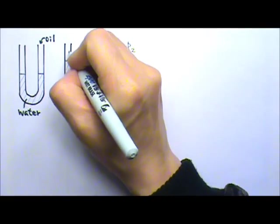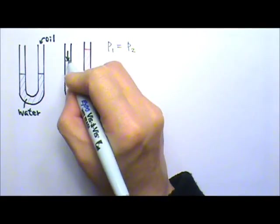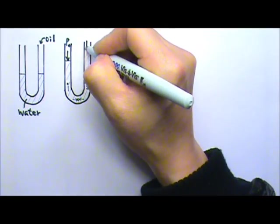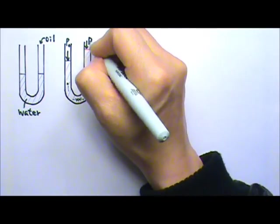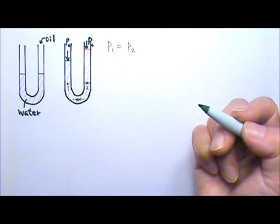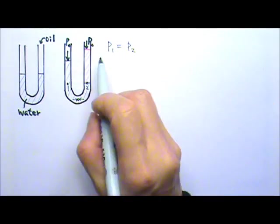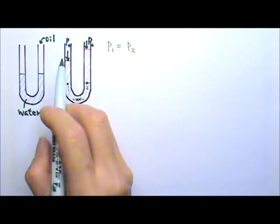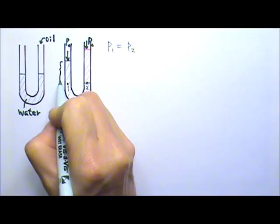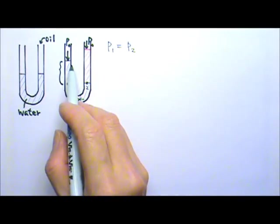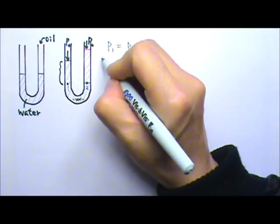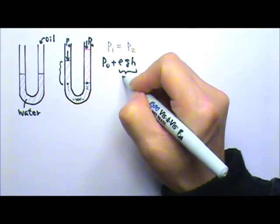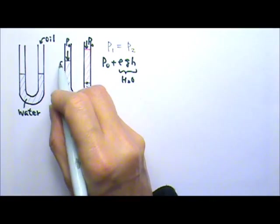On the top over here, the surface is exposed to the atmospheric pressure P0. The surface here is also exposed to the atmospheric pressure P0. Which means P1, the pressure over here, is P0 plus the ρgh produced by this column of water. So P1 is P0 plus the ρgh by the water column on this side.